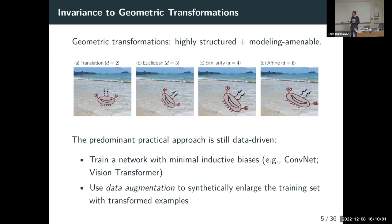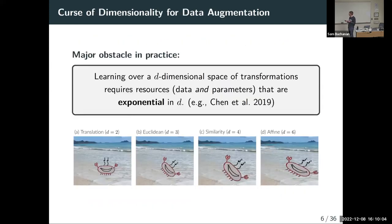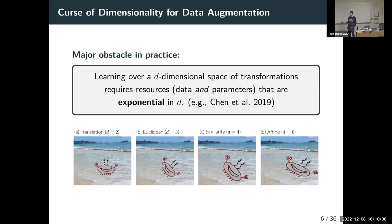This runs into a very basic complexity scaling barrier — a curse of dimensionality — where for groups of transformations generated by higher-dimensional motions parametrized by some number d, there's an exponential barrier associated with both the resources needed to learn and the number of model parameters needed to achieve uniform invariance. For lower-dimensional groups like translation with d equals 2, the overhead is mild. But when talking about higher-dimensional groups involving pose or scale changes, things become very quickly impractical.